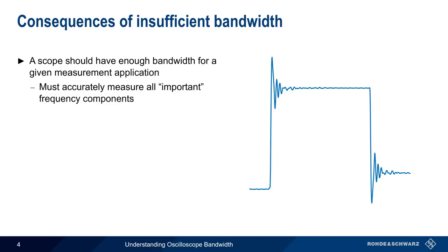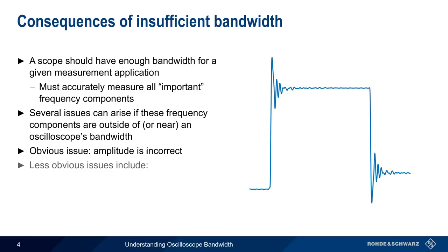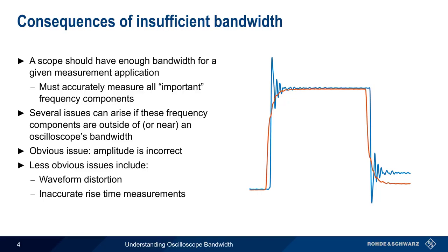If these components are outside of, or sometimes even just near, the scope's bandwidth, this can lead to several different issues. The most obvious of these is that the amplitude of the measured signal will be incorrect. Less obvious, but often more important issues include distortion of the acquired waveform and the inability to make accurate rise time measurements.